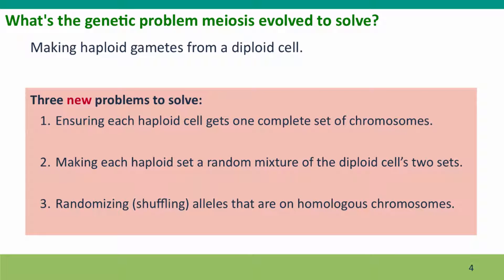This creates three new problems that meiosis has to solve. The first is ensuring each haploid cell gets one complete set — not incomplete sets, not too few chromosomes or too many. The second is making each haploid set a randomized mixture of the diploid cell's two sets and shuffling alleles that are on homologous chromosomes.